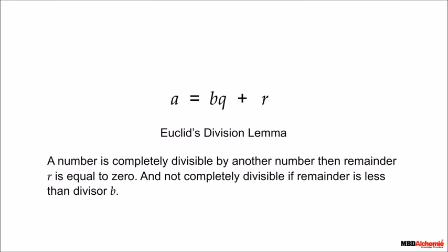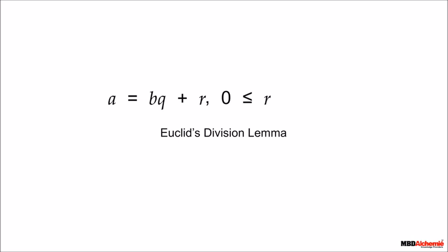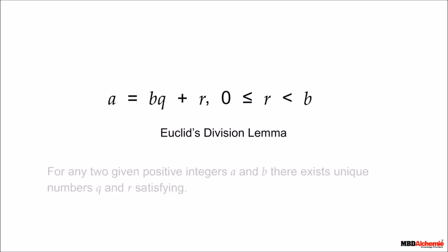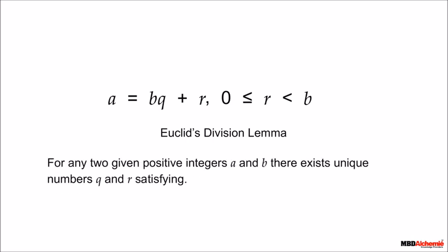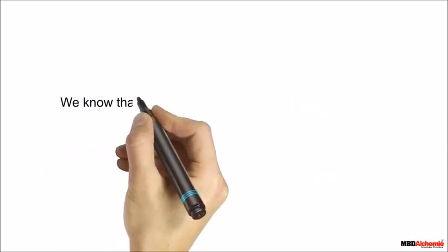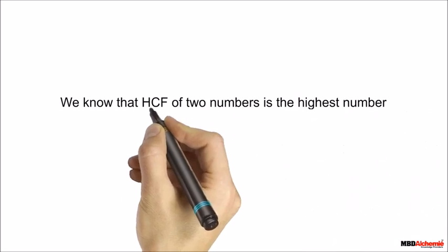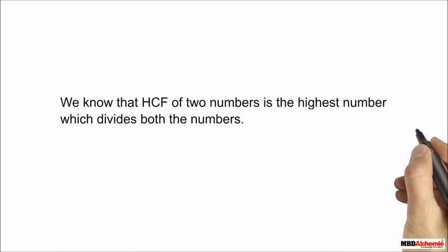When a number is completely divisible by another, the remainder r equals zero. If not completely divisible, the remainder is less than the divisor b, which means r is greater than or equal to zero and less than b. Thus, Euclid's division lemma states: for any two given positive integers a and b, there exist unique numbers q and r satisfying a = bq + r, where 0 ≤ r < b.